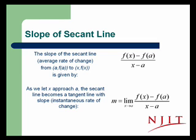So the slope of the secant line, which gives the average rate of change along a curve from (a, f(a)) to (x, f(x)), is given by the change in the y values, f(x) minus f(a), over x minus a. As we let x approach a, we get 0 over 0, and this secant line becomes a tangent line, which represents the instantaneous rate of change along the curve at that point, at a, at x equal a. And we denote that by m, and that's defined to be the limit as x goes to a of the slope of the secant line, f(x) minus f(a) over x minus a.